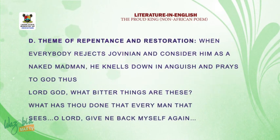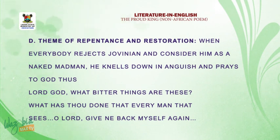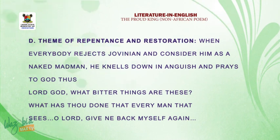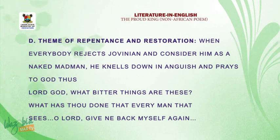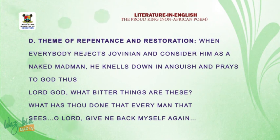Another theme is repentance and restoration. When everybody rejects Jovnian and considers him a naked madman, he kneels down in his anguish and prays: 'Lord God, what bitter things are these? What hast thou done? O Lord, give me back myself again.' The Almighty God pardons the king and restores him. Immediately after his restoration, those who had denied him — the chamberlains, the lords, the servants, the soldiers, even his queen — were able to recognize him as their king.